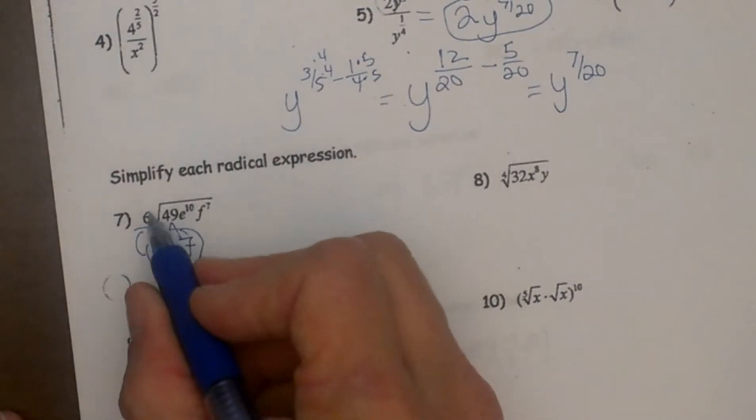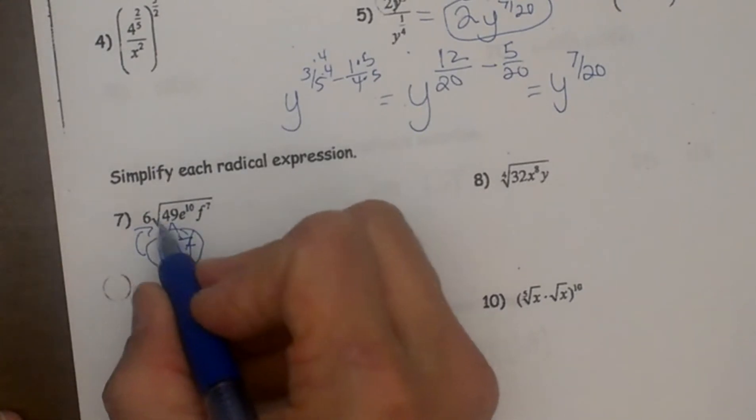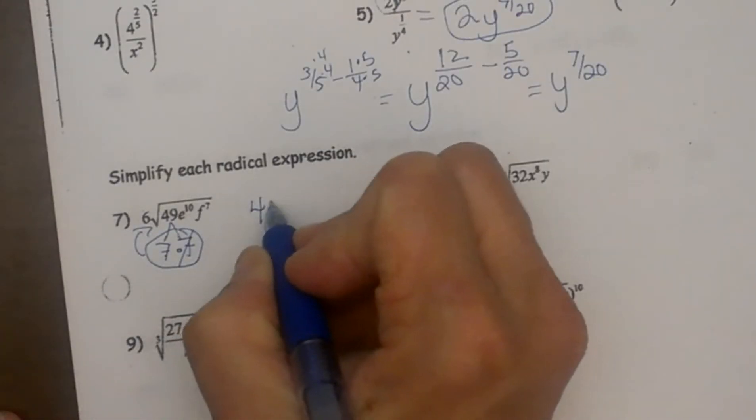Now if I bring a term out, what I have to do is multiply it with the term that is already there. I am going to take out a 7 because the square root of 49 is 7, and 7 times 6 is 42.